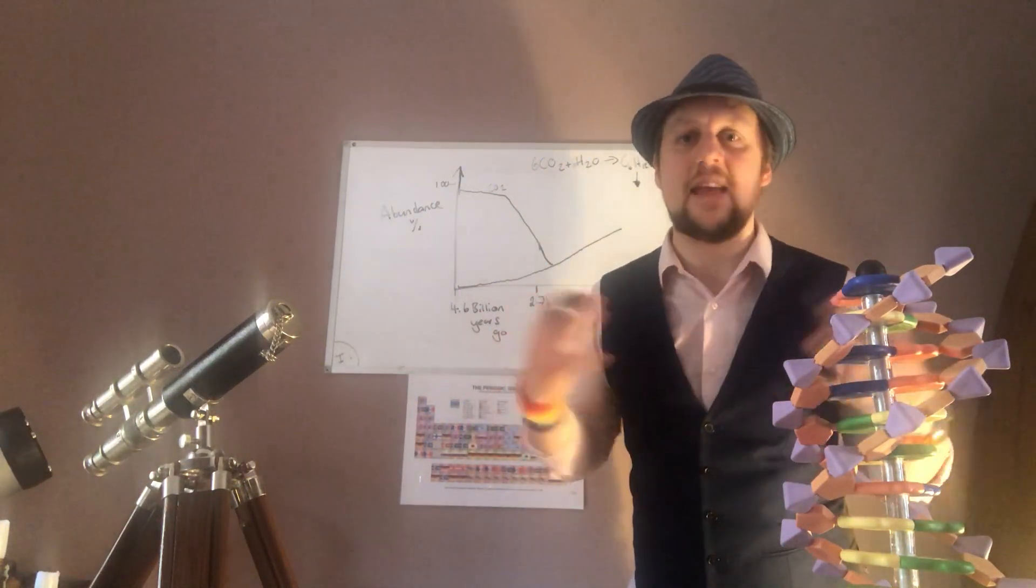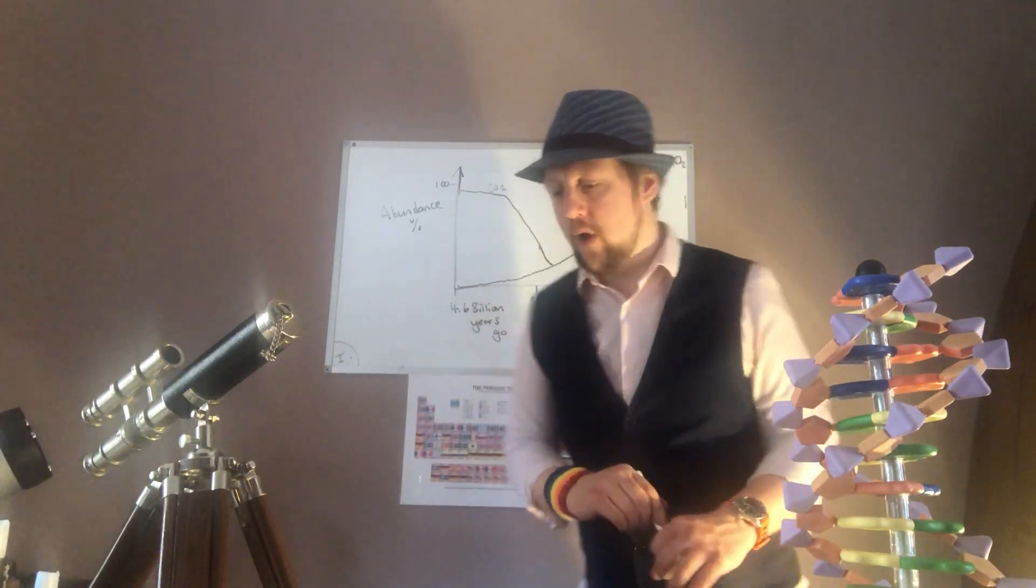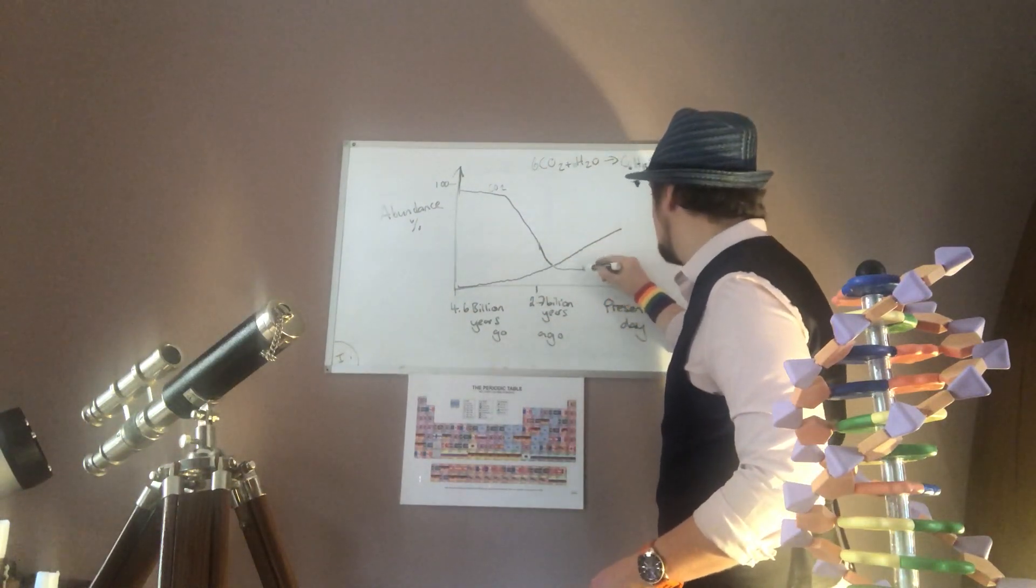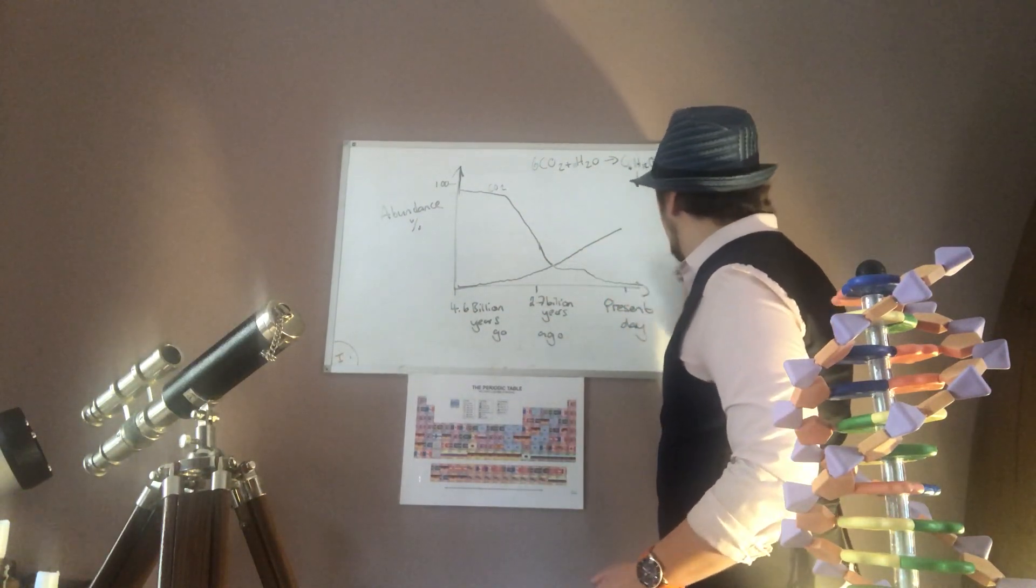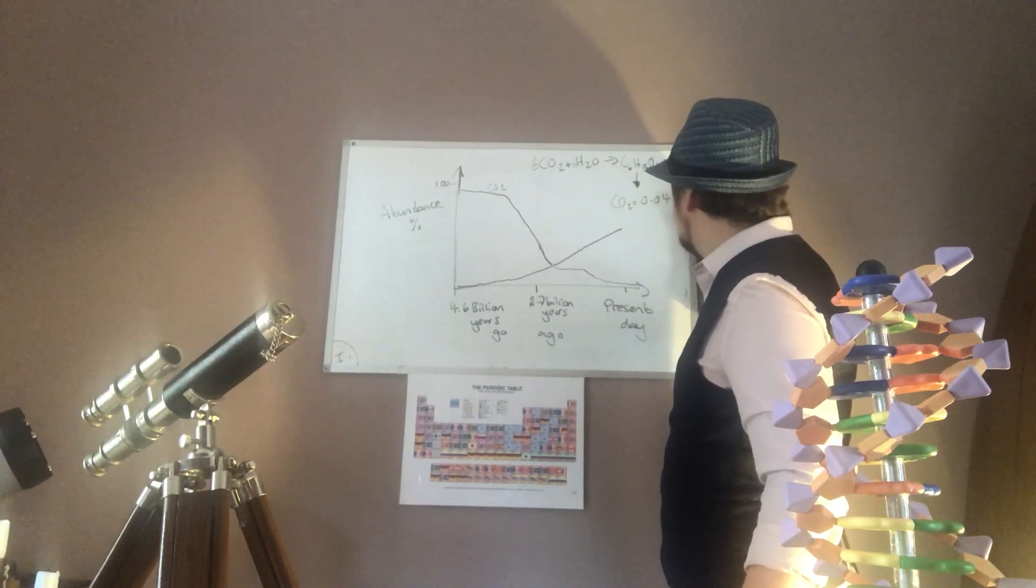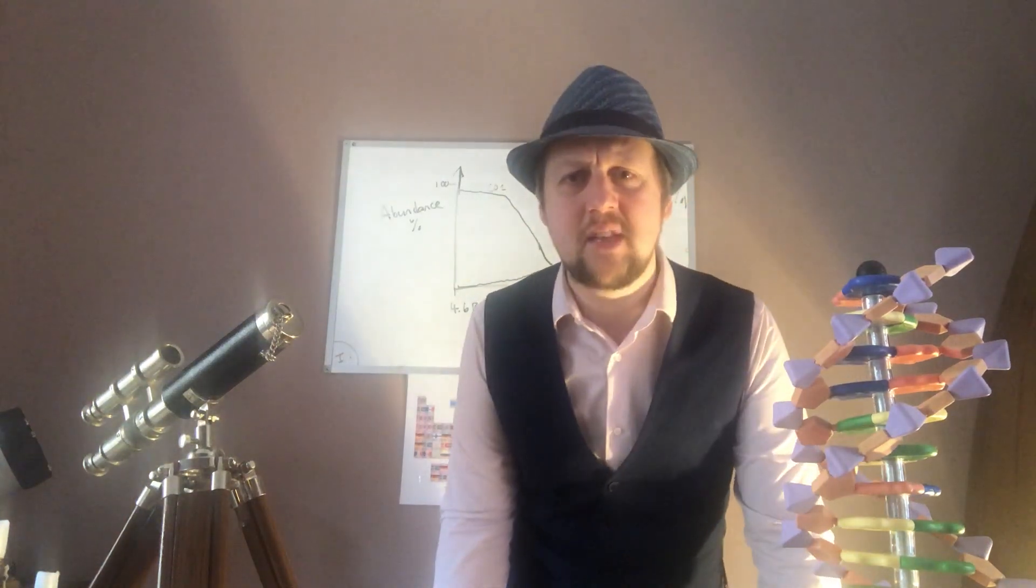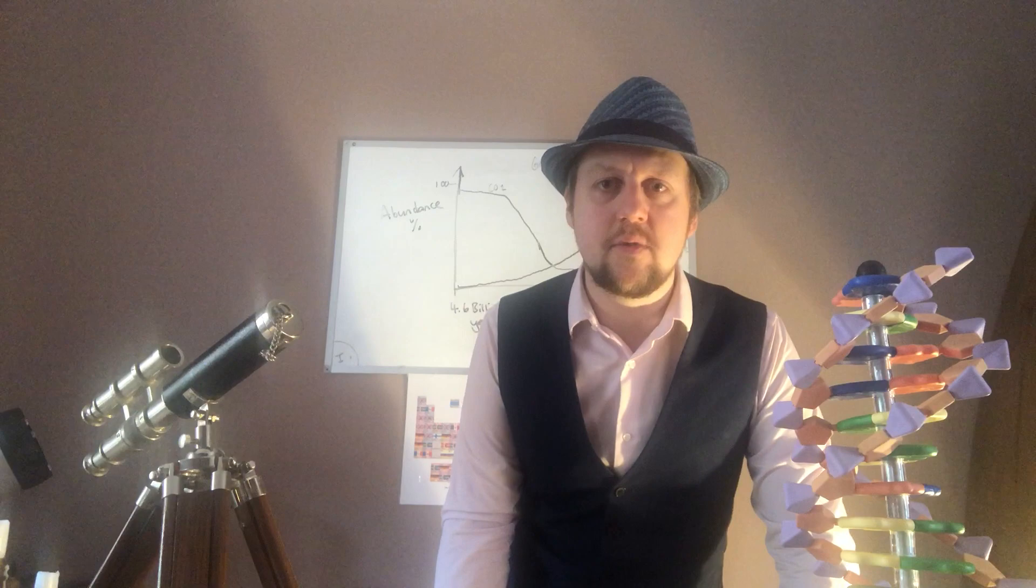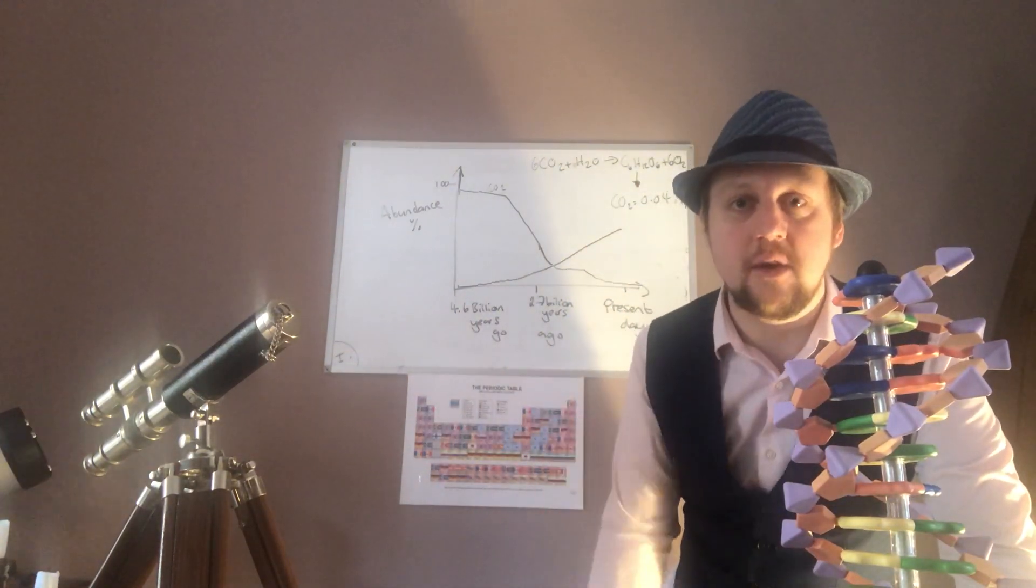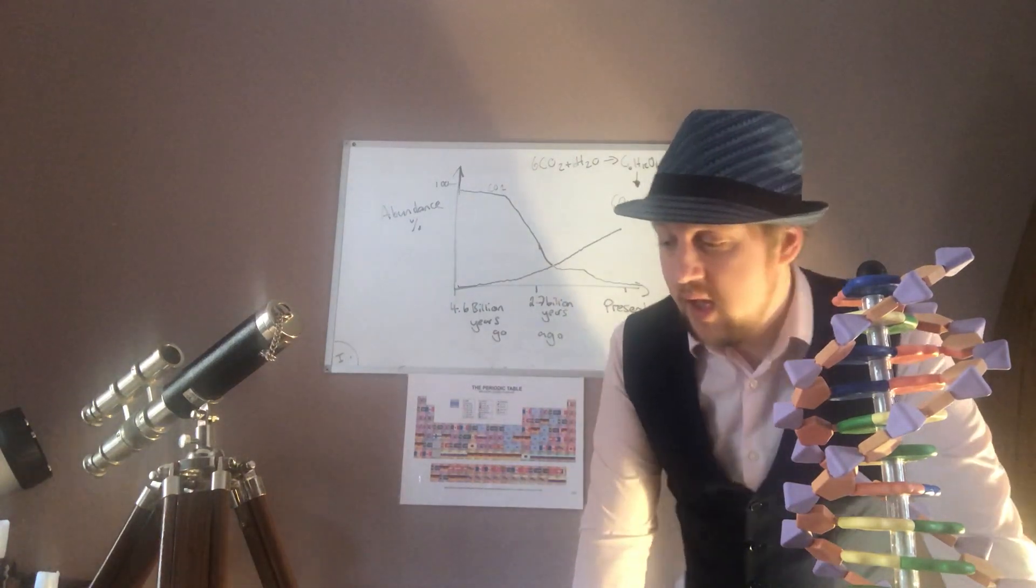Over time, water condensed to form the oceans, photosynthesis happened, all that carbon dioxide being taken in, oxygen levels on the rise, until we get to what we've got today. Our atmosphere today is much nicer. Carbon dioxide now is about 0.04%, which doesn't seem like a lot, but remember carbon dioxide is a greenhouse gas and has a massive impact in terms of trapping heat from the sun.